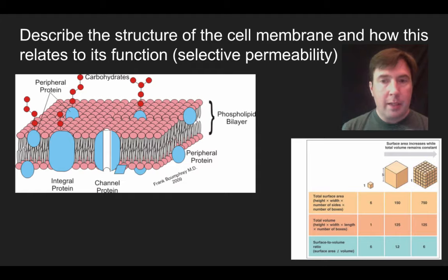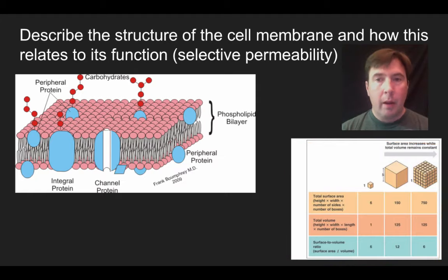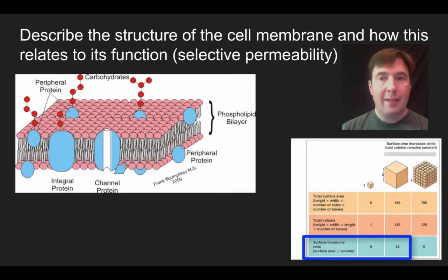So one of the questions that sometimes comes up is why are cells so small? And that's why I have this diagram over here on the right. And what we find is that as cells get larger, their surface area and their volume both increases. But what we find is that the surface area to volume ratio ends up getting much smaller. So as the surface area increases, the volume increases much faster, and therefore it's harder for materials to get into and out of cells very easily.